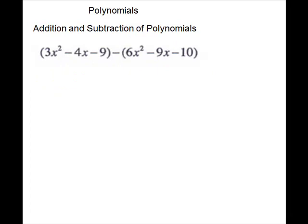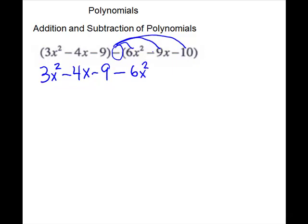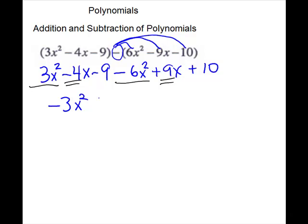Let's look at one more subtraction of polynomials problem. There is no reason for the first set of parentheses — no exponent, nothing outside — so we can remove them: 3x squared minus 4x minus 9. On the second one, be sure to distribute your minus to save yourself lots of errors. So minus 6x squared. Be careful on the next one: negative times negative gives you positive 9x, and negative times negative gives you positive 10. Now combine like terms: 3x squared minus 6x squared gives us negative 3x squared. For the x terms, different signs — subtract, sign of the larger — 9 is larger, so 9 minus 4 is 5, positive 5x. For the constants, different signs, subtract, sign of the larger.